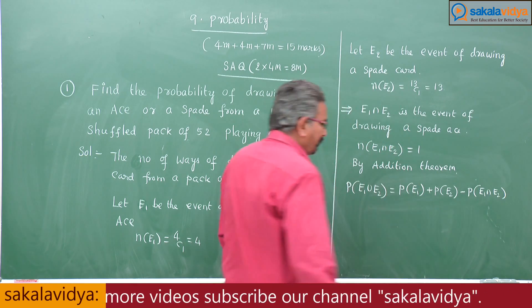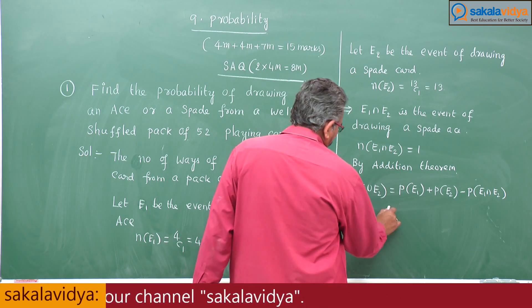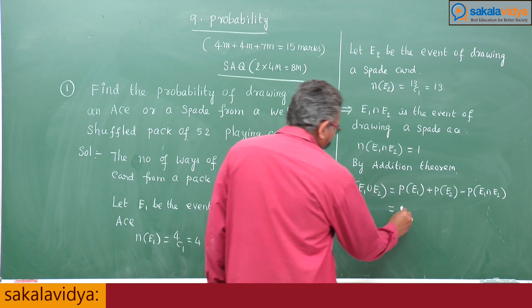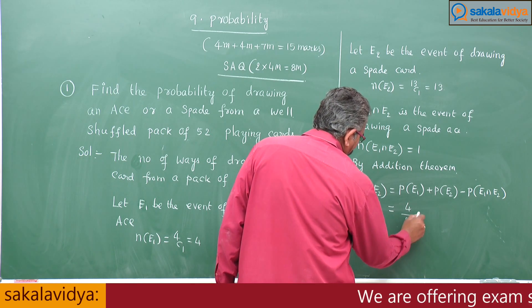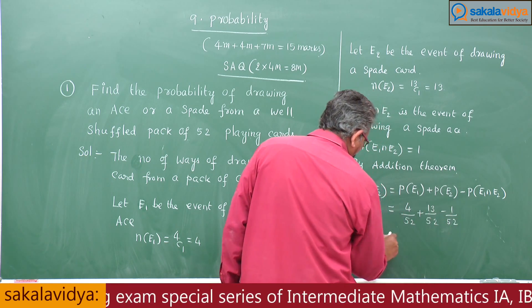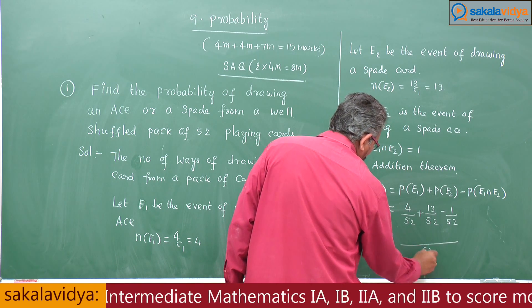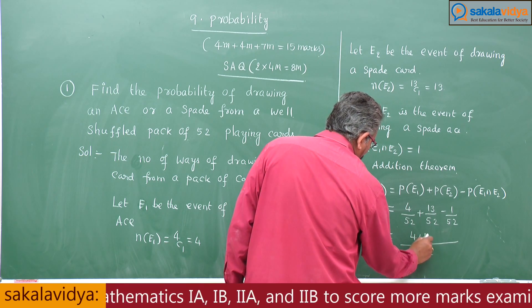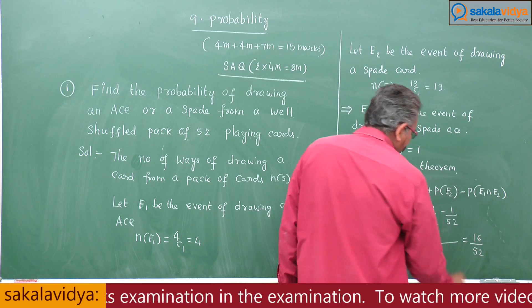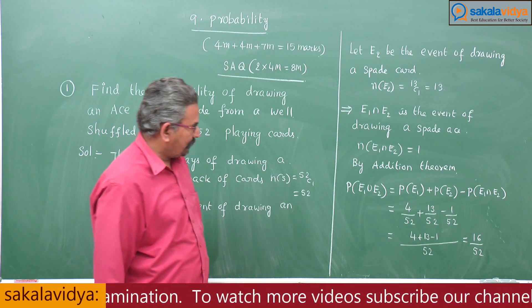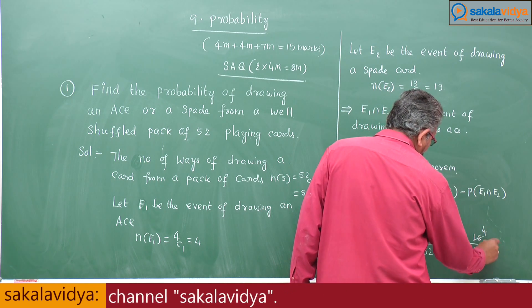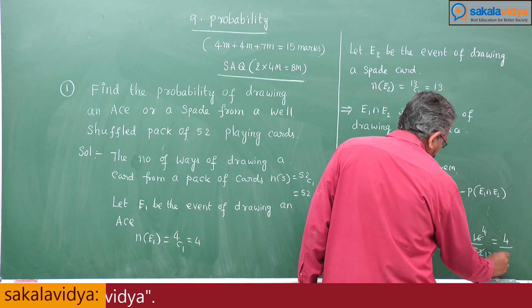P(E1 ∪ E2) is equal to P(E1) plus P(E2) minus P(E1 ∩ E2). P(E1) is 4 by 52, plus 13 by 52, minus 1 by 52. 52 is the LCM, so 4 plus 13 minus 1 equals 16 by 52. In simplest form, the answer is 4 by 13.